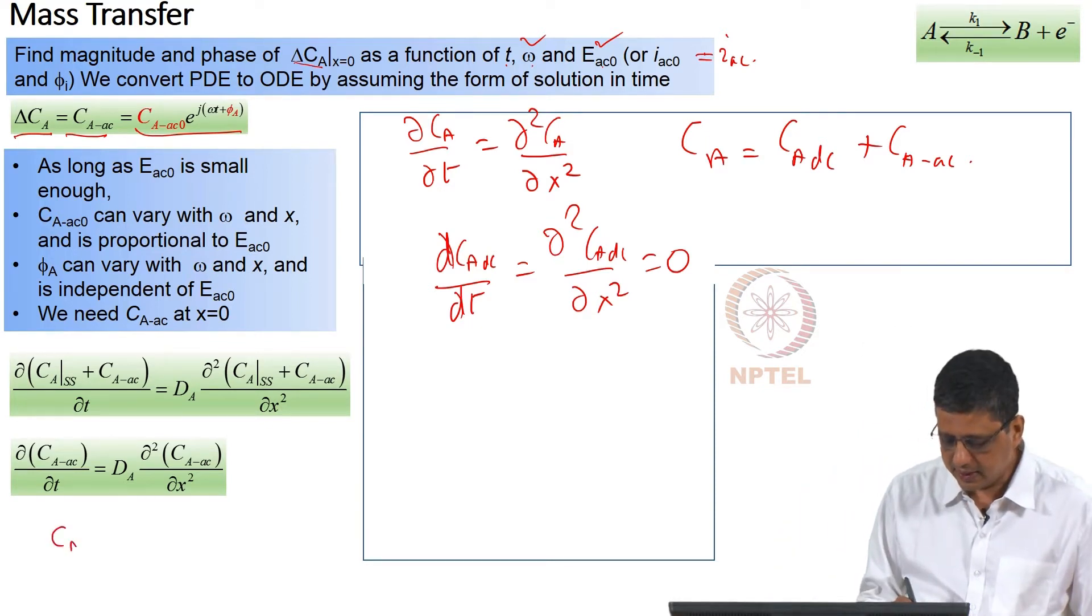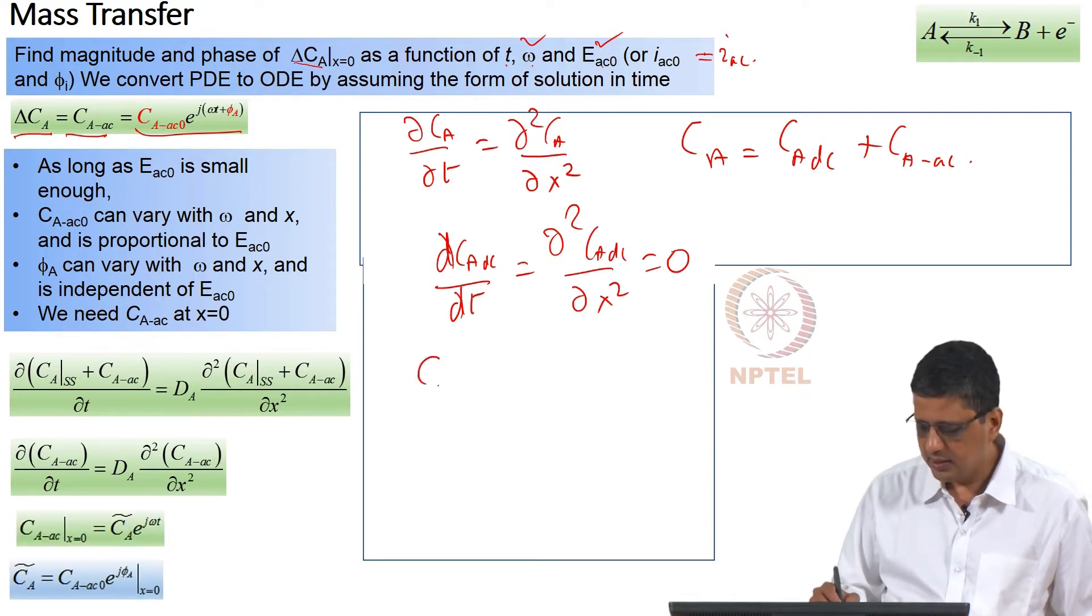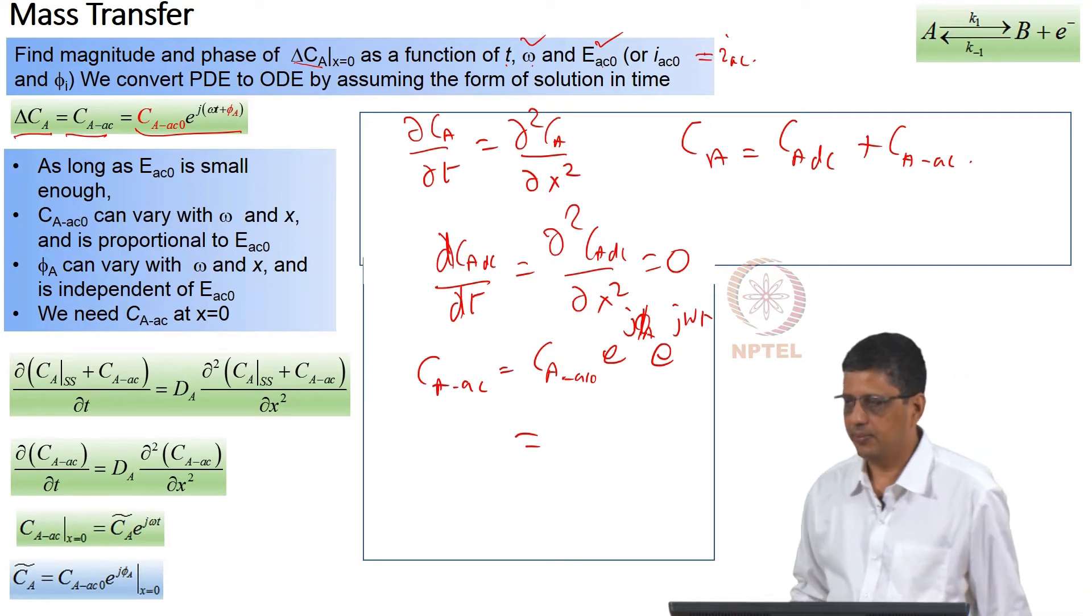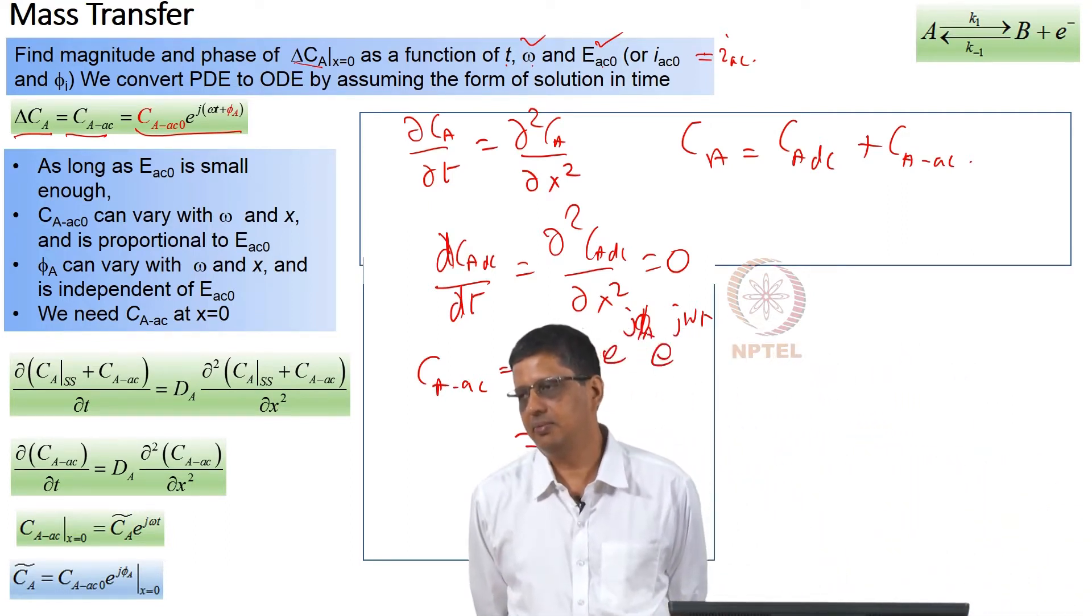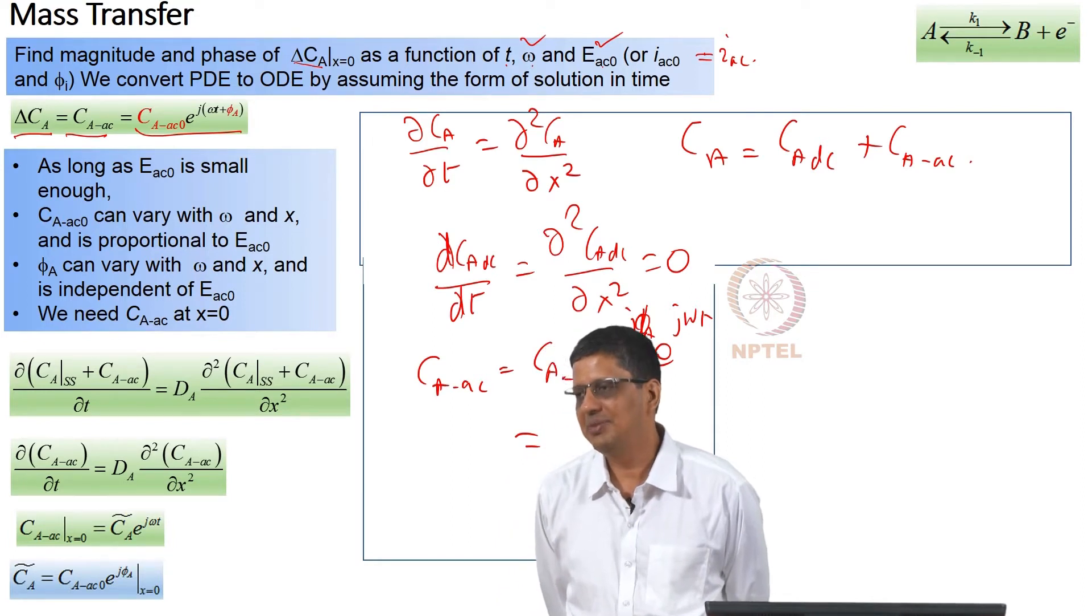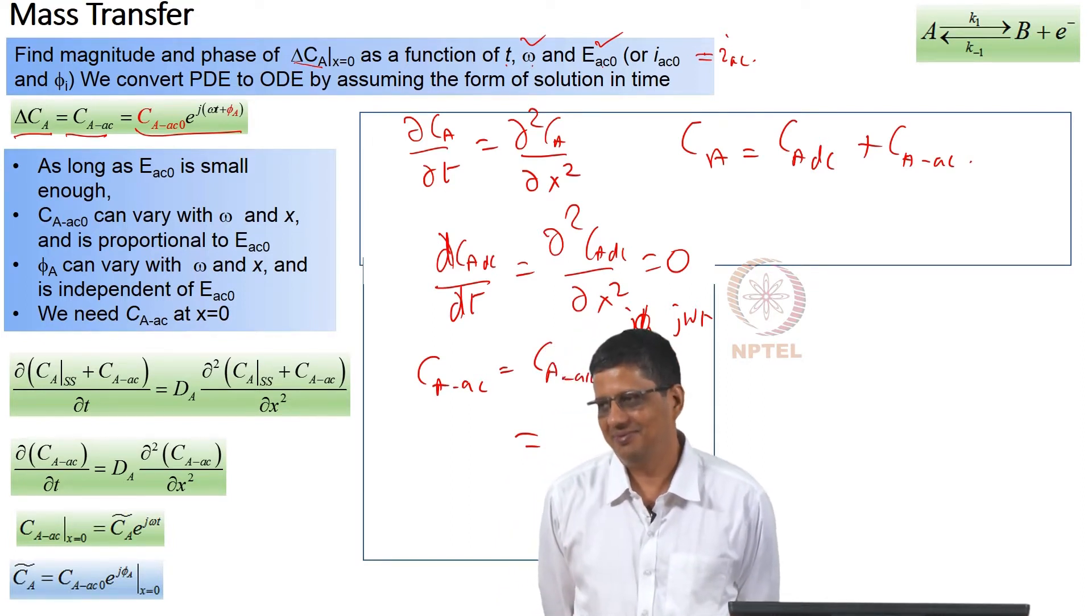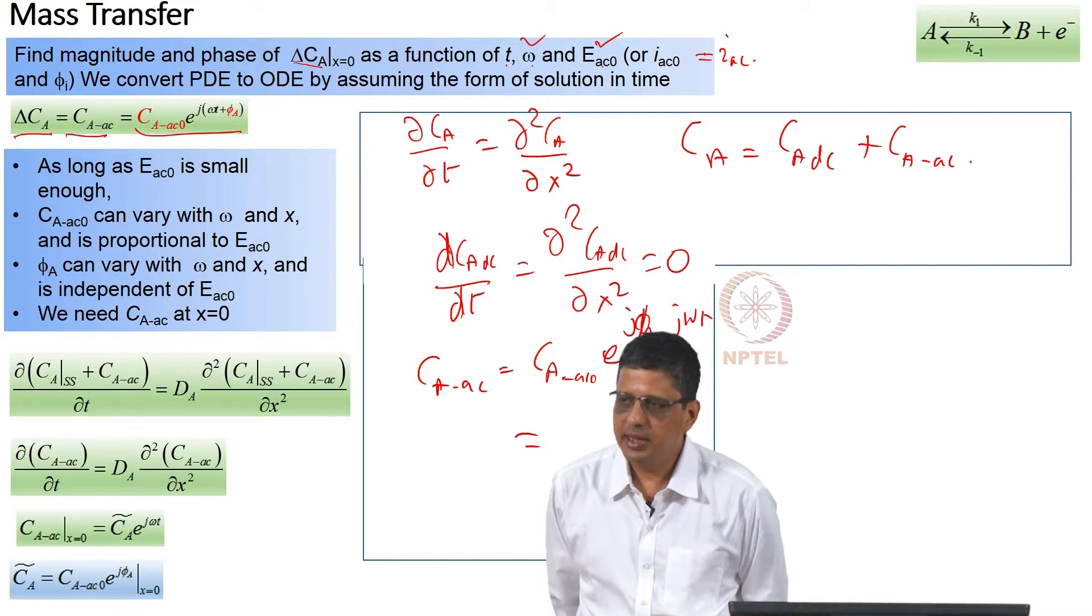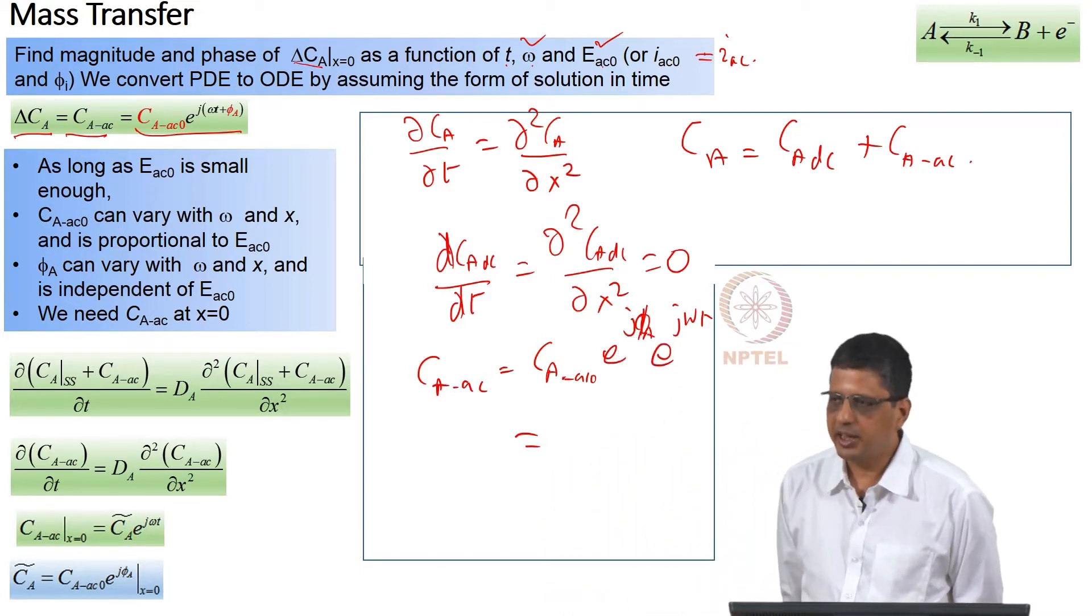Now C_A_AC, I will not write it here. I will write it on this side. C_A_AC. I am going to write it as C_A_AC_0·e^(jφ_A)·e^(jωt). You can assume it to be sinusoidal. If you assume it to be something else, it will not work. e^(jωt) makes it a little easier for us. e^(jωt). But you can assume it to be C_A_AC_0·sin(ωt + φ_A).